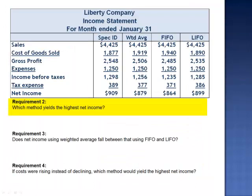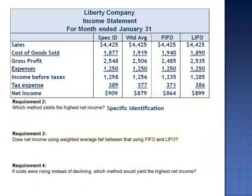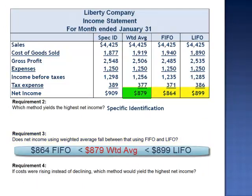Requirement 2 asks which method yields the highest net income. The highest net income is realized when the specific identification method is used. Requirement 3 asks whether net income using the weighted average falls between that using FIFO and LIFO — and yes it does. The answer to this question should always be yes.